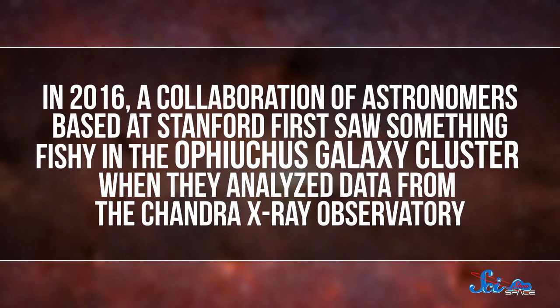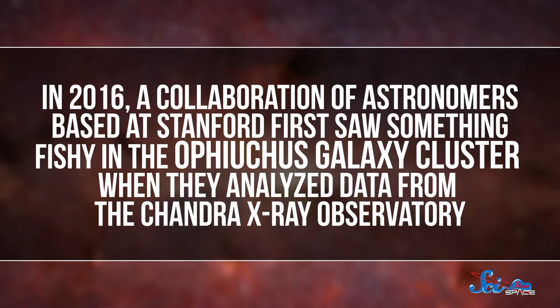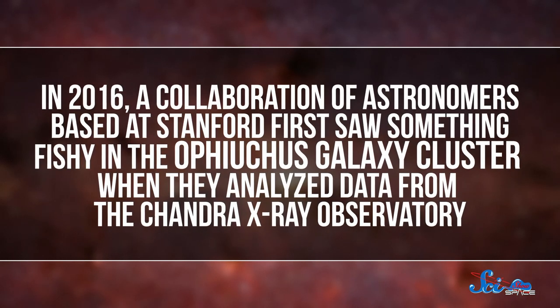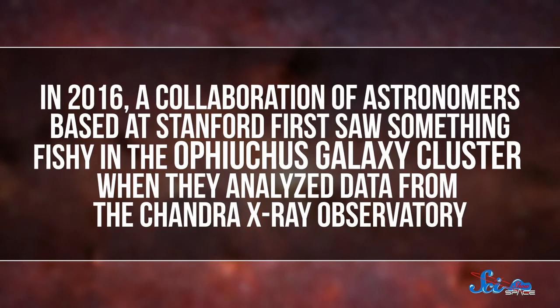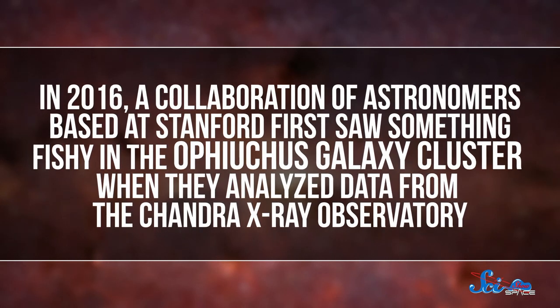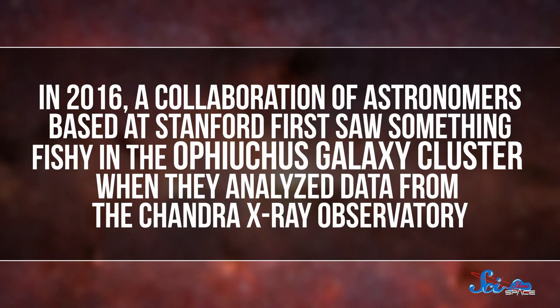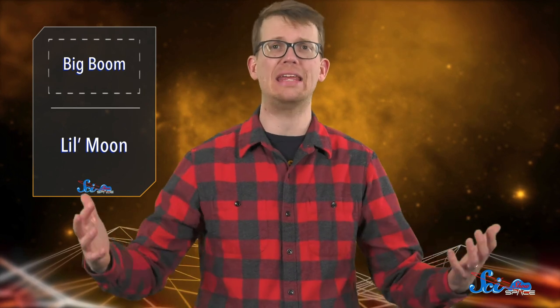Back in 2016, a collaboration of astronomers based at Stanford first saw something fishy in the Apheucus galaxy cluster when they analyzed data from the Chandra X-ray Observatory. The cluster is about 390 million light-years away, and it has a whole bunch of galaxies surrounded by dust and gas.